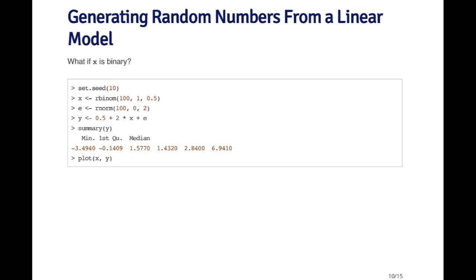Just a slight variation of the previous example. What if, instead of x being a normal random variable, x is a binary random variable? Remember, maybe it represents gender or maybe some treatment versus control or something like that. So here it's very simple. I can generate binary data using the binomial distribution and the rbinom function. So I set the seed again and I generate 100 binomial random variables.